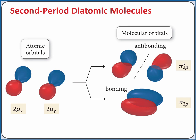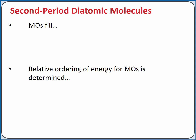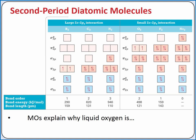When filling molecular orbital diagrams with electrons, we fill molecular orbitals similarly to atomic orbitals — starting with the lowest energy available orbital, and for degenerate orbitals, filling one electron per orbital with parallel spins before adding a second. The relative ordering of energy for molecular orbitals is determined computationally for each molecule. For diatomic molecules of second-row elements B₂, C₂, and N₂, the pi 2p bonding molecular orbitals are lower in energy than the sigma 2p bonding molecular orbitals. For O₂ and F₂, this order switches.